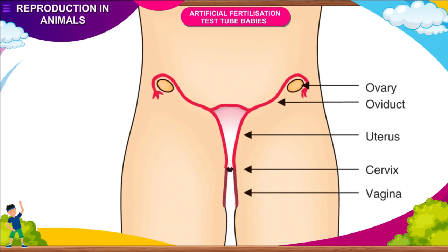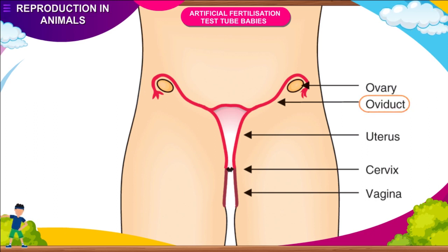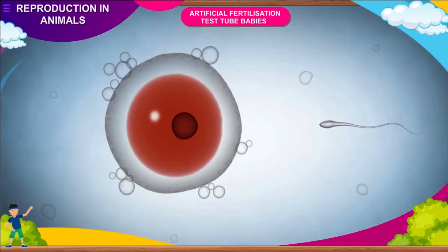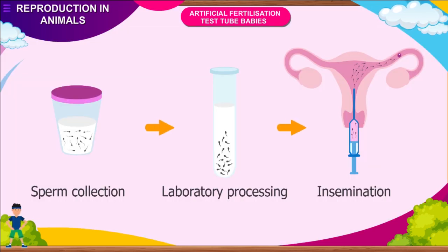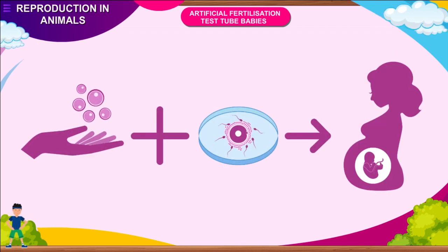Artificial Fertilization — Test Tube Babies: if the oviduct of a woman is blocked, she will not be able to bear a baby. This is because it prevents the ovum from being fertilized, as the sperms cannot reach the oviduct where the ovum is present. This problem can be solved if the ovum is fertilized with human sperms in the laboratory using a technology called in vitro fertilization. In this technique, the doctor collects the released eggs and sperms and fuses them together outside the body of the female.